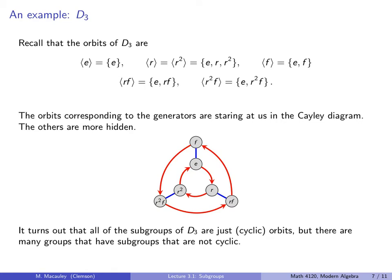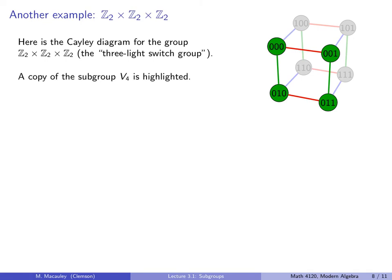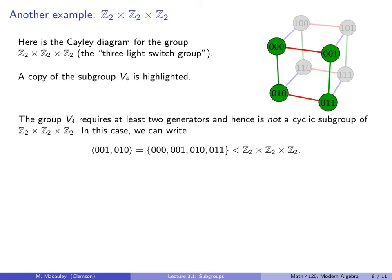It turns out that all of the subgroups of D3 are just cyclic orbits. But there are many groups that have subgroups that are not cyclic. And here is an example of that. Z2 cross Z2 cross Z2. So here's the Cayley diagram on the right. You can think of this as the three light switch group. So a copy of the subgroup isomorphic to the Klein 4 group is highlighted right here. This is a subgroup, but it is not cyclic because the group V4 requires at least two generators.